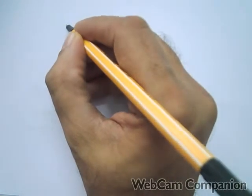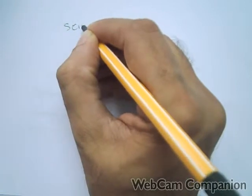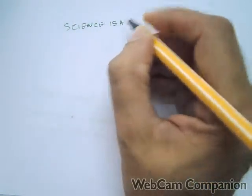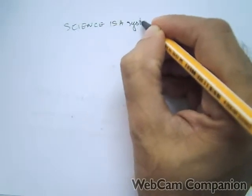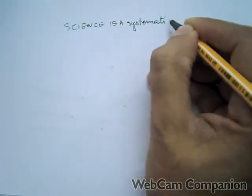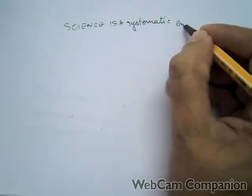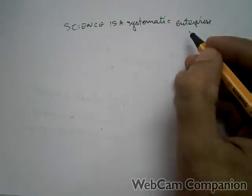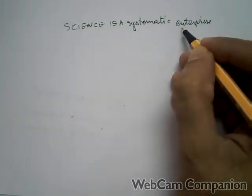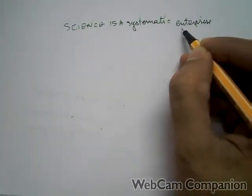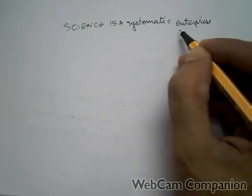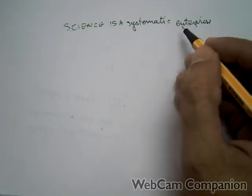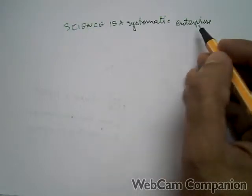It says that science is a systematic enterprise, which means it's not something that somebody will do on their own. It's a social activity involving more than one person working together.